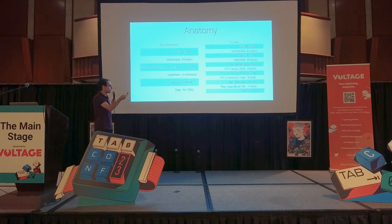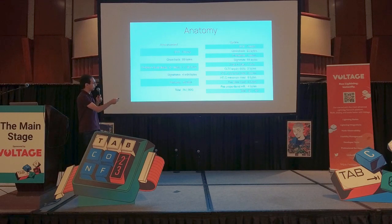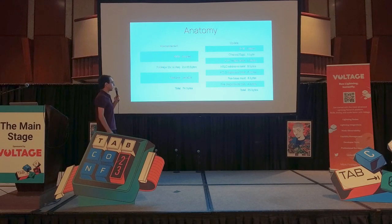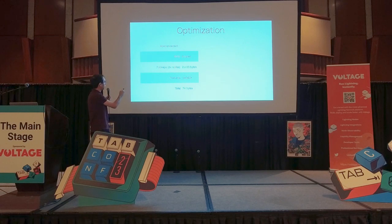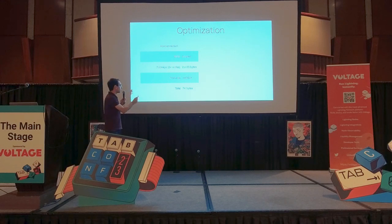Now we have reduced the amount of data quite a bit, but that's still not quite everything we can do. Let's first address the channel announcement. If we look at it, we have the SCID, we have two pub keys, we have the channel features which can be variable length. We're working with 74 bytes right now. However, what happens if you have a really well-connected node and you're getting all of those channels? This particular node's public key is going to keep showing up in every single channel announcement connected to it.